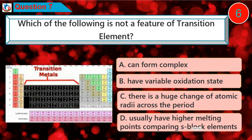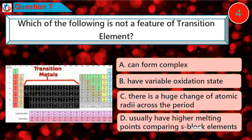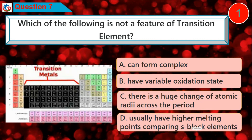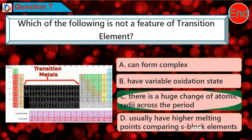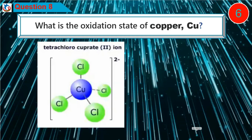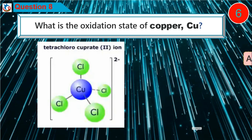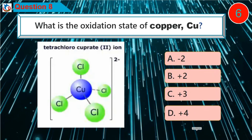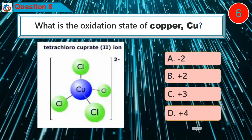Question 8: What is the oxidation state of copper? A. minus 2, B. plus 2, C. plus 3, D. plus 4.